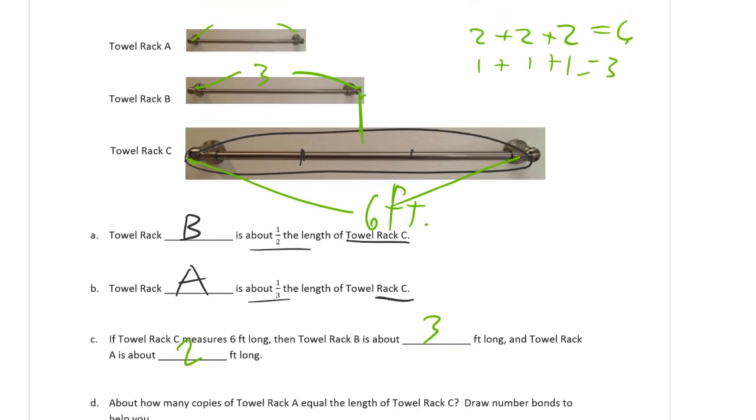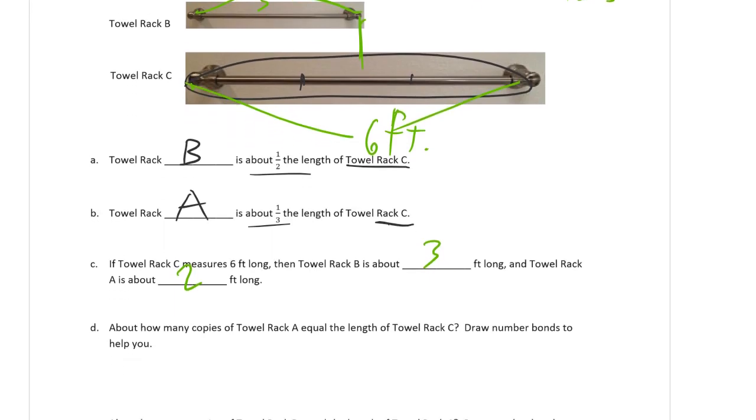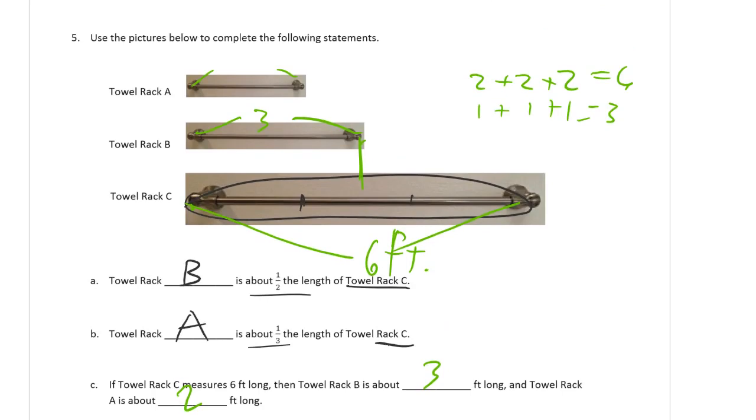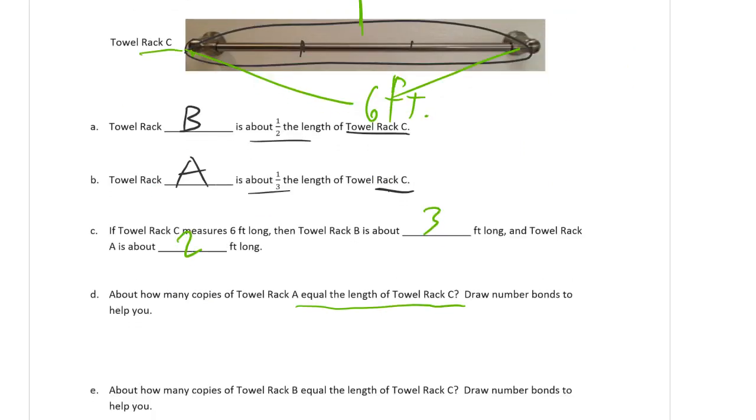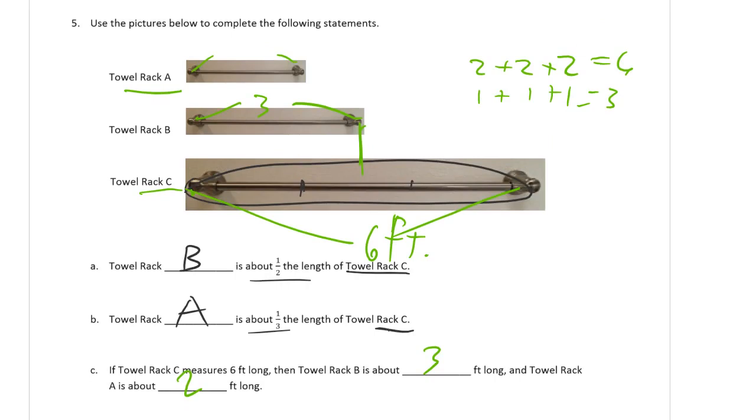How many copies of towel rack A equal the length of towel rack C? So how many A's does it take to make a C? Draw number bonds to help you. So we know that this, it takes three of these, right, from this equation here, it takes three A's to make a C.